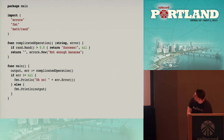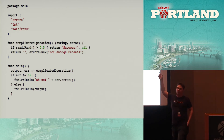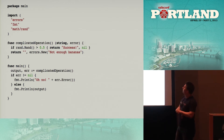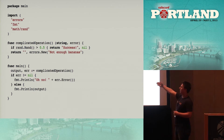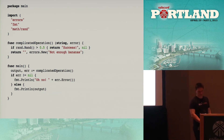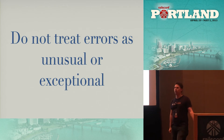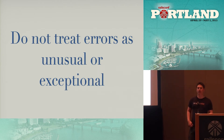Here's an example. We have a main package importing errors, fmt, and math/rand. A 'complicatedOperation' returns a string and an error — that's the syntax for multiple return values, declared in parens. If math.rand is greater than 0.5, you return 'success' and nil. Otherwise, you return an empty string and an error. In client code, you get the error out, check if it's not nil, handle it by printing 'oh no,' otherwise print the output and move on. The idea is: do not treat errors as unusual or exceptional. Errors happen in software all the time, and if we want to build robust programs, we should treat them as part of normal control flow.